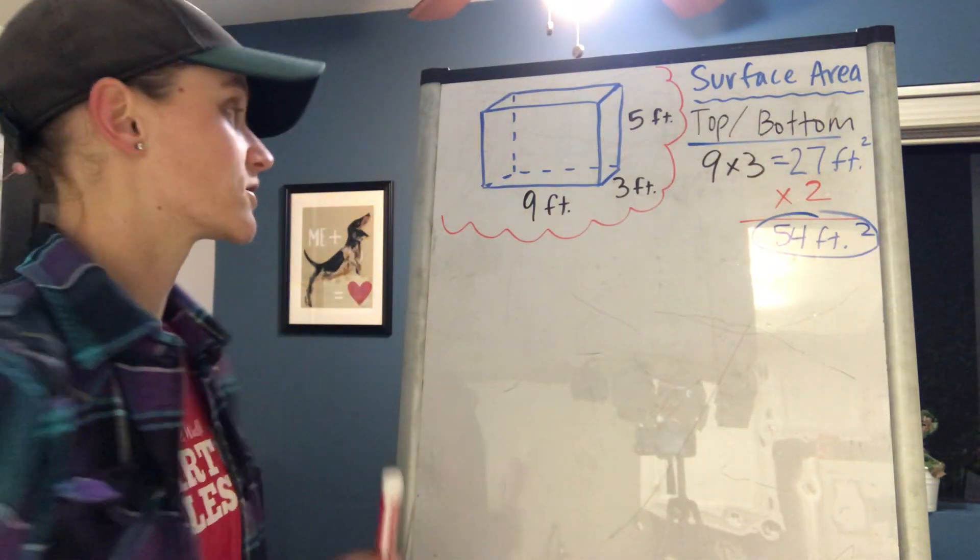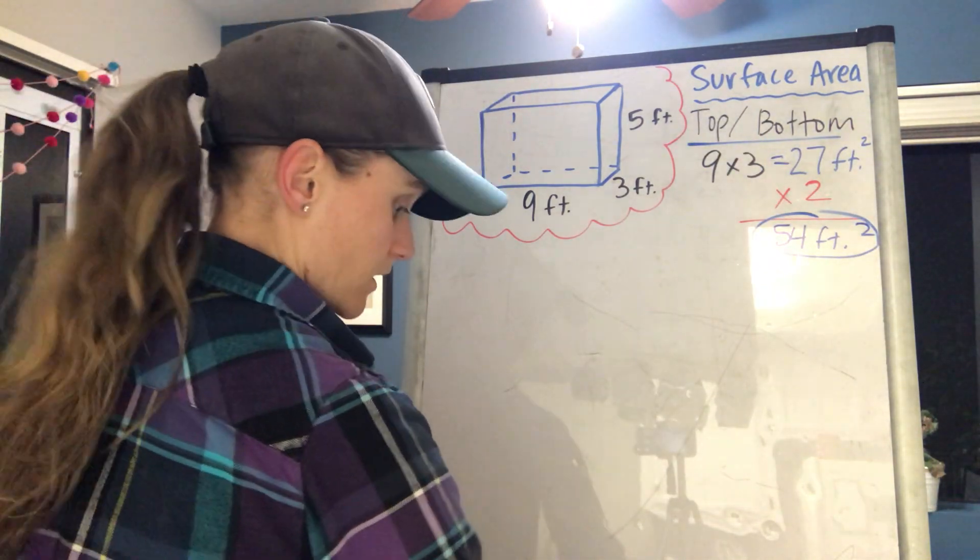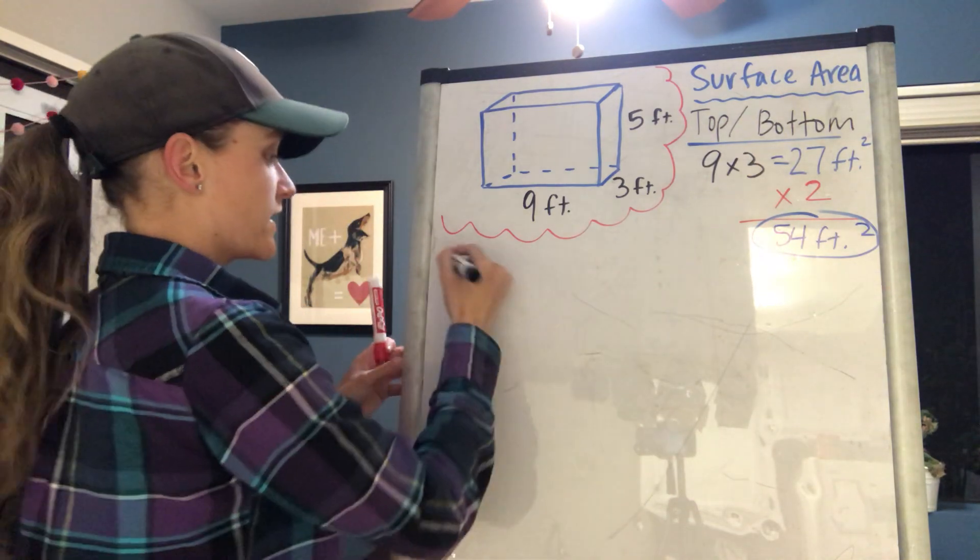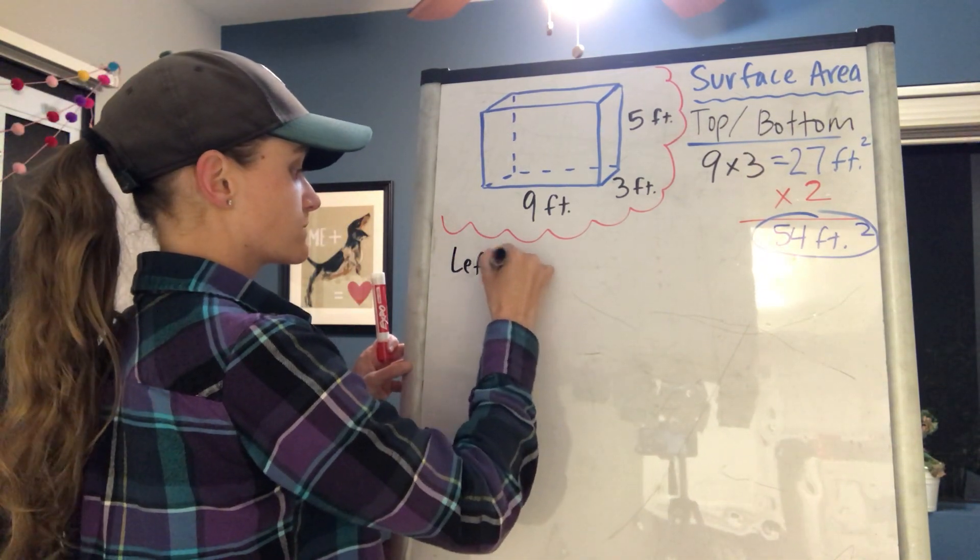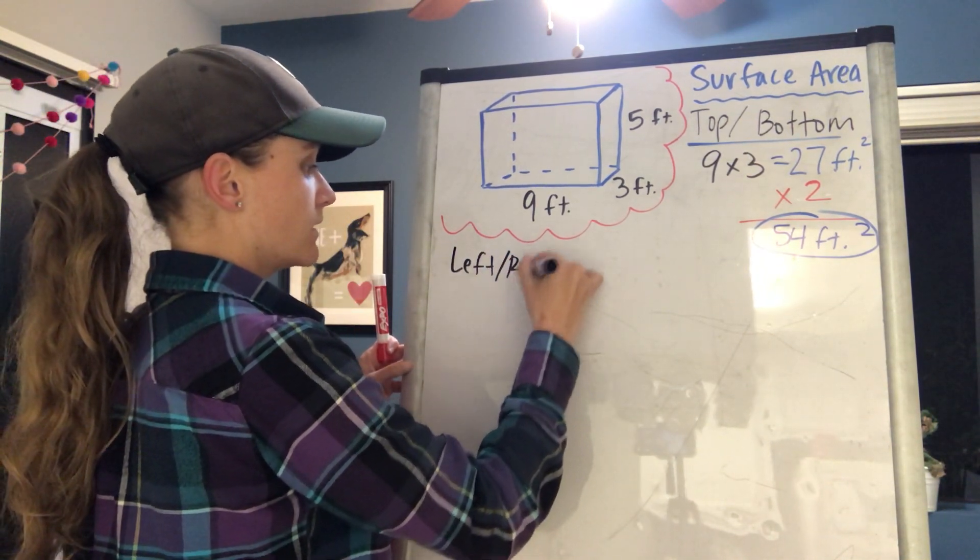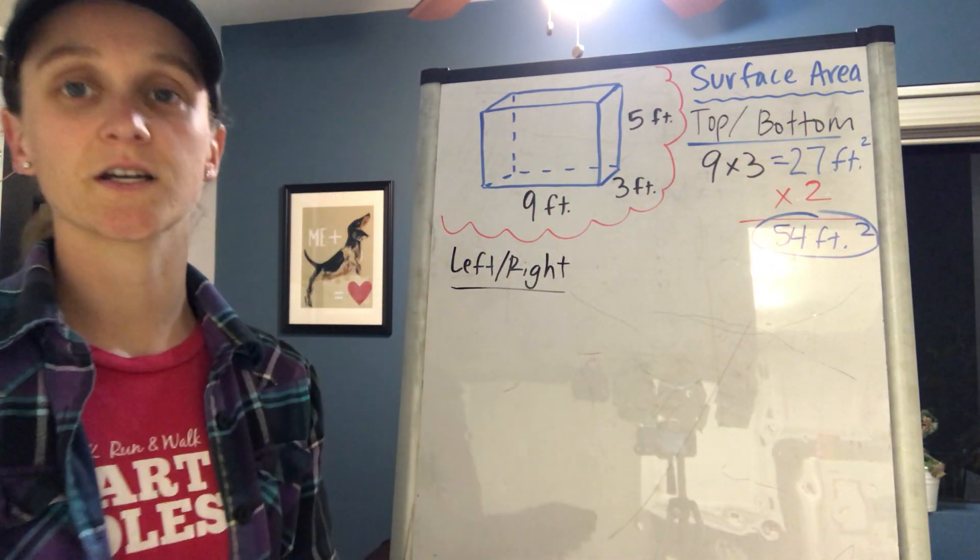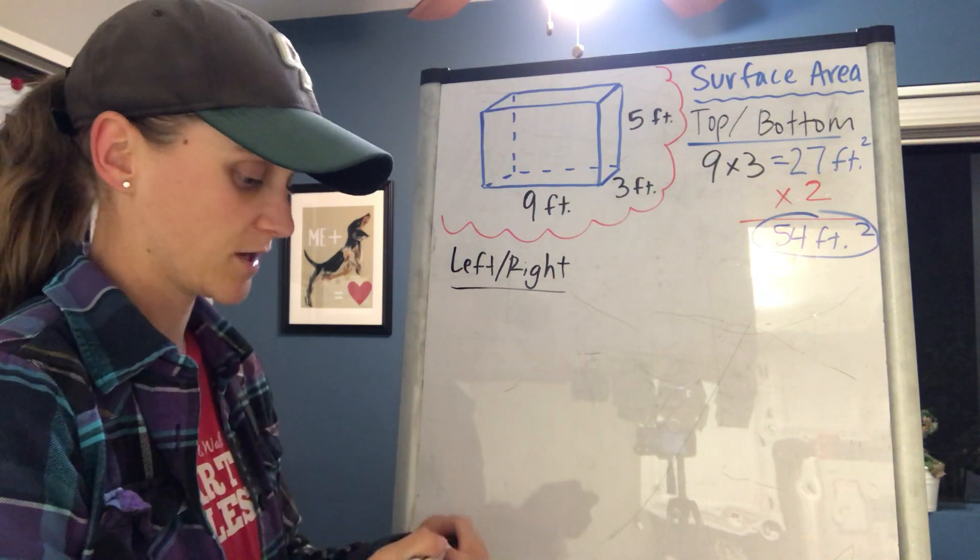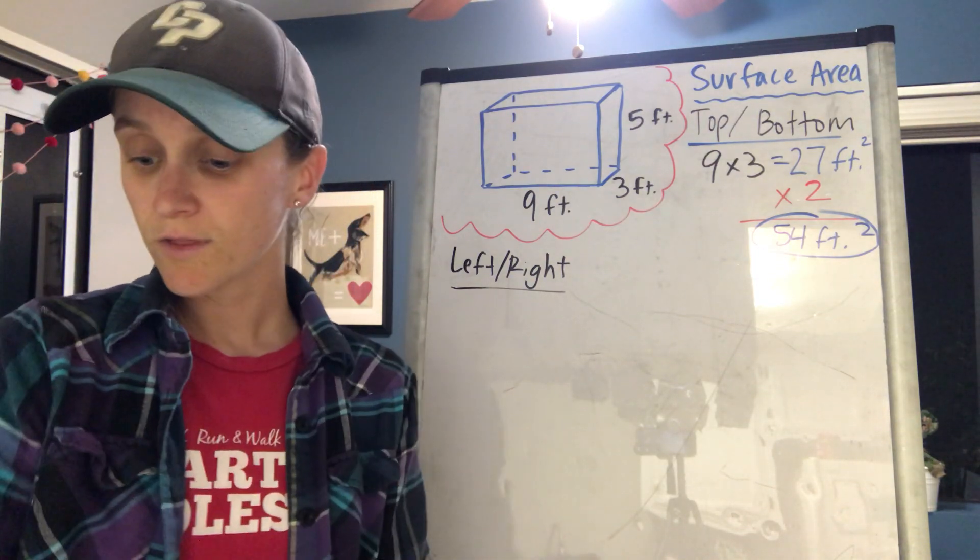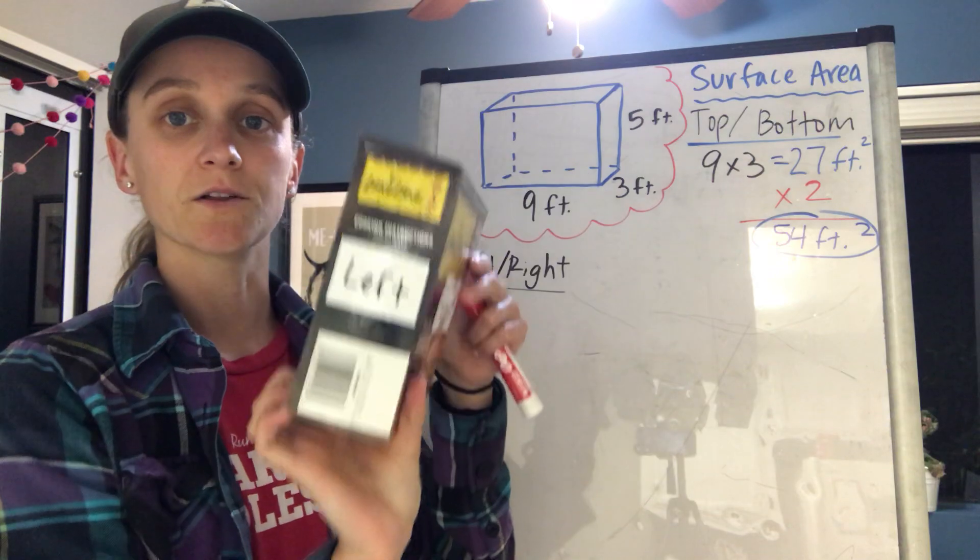Why don't we do the left and the right this time. If you want, you can find the area of all six sides separately, but it does make it a little bit easier if we just group them together. So again, we know that the right and the left are the same size on a rectangular prism.